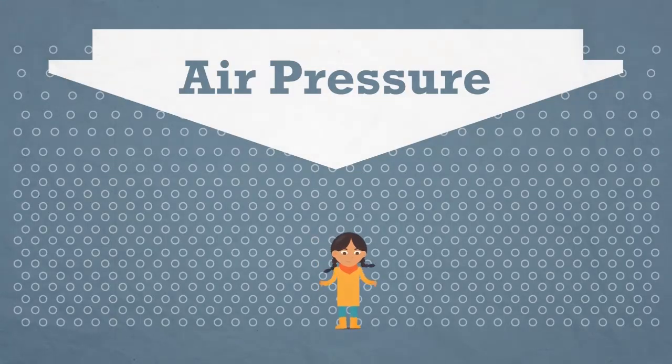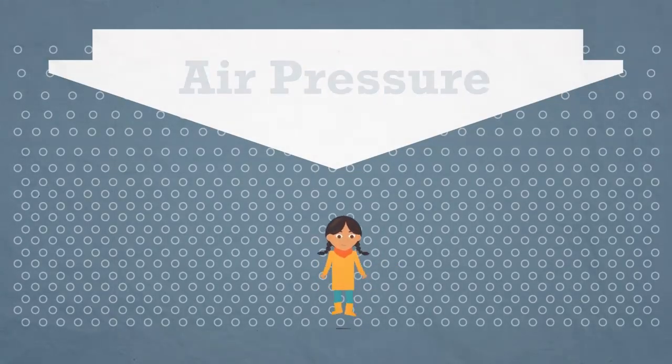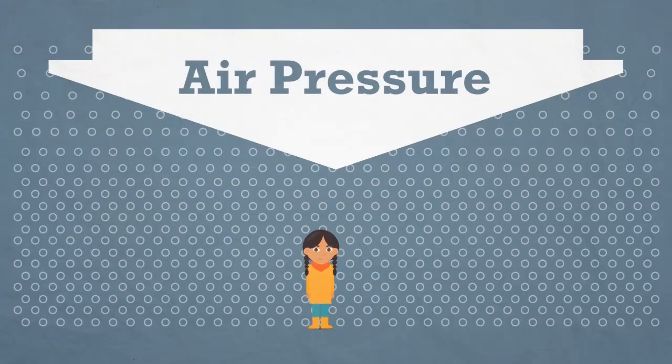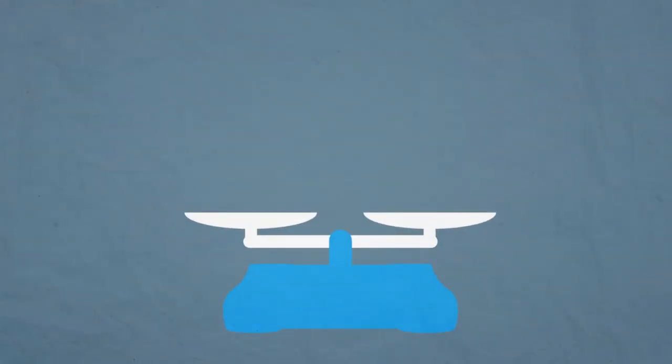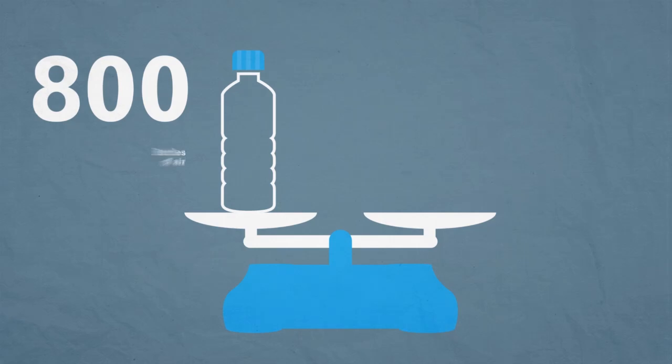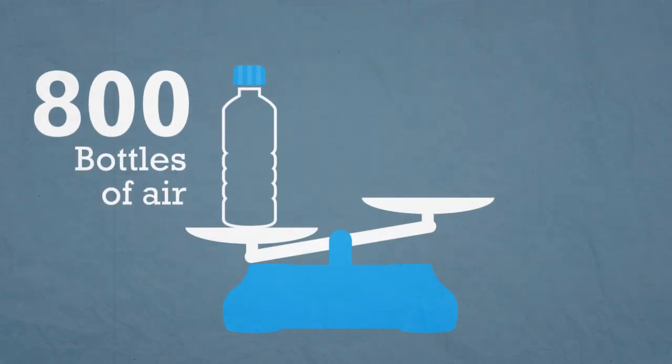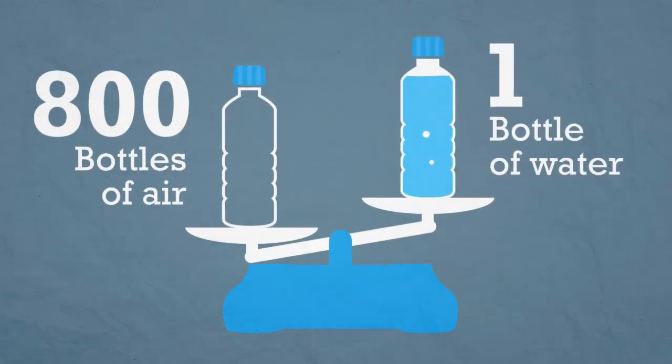We cannot feel air pressure because our bodies are naturally able to cope with the weight of the air above us. In fact, air is so light that it takes about 800 bottles of air to weigh as much as just one bottle of water.